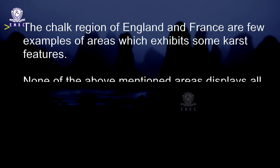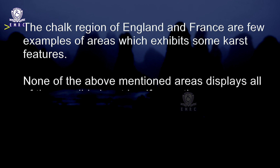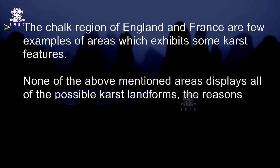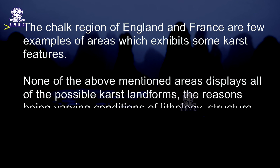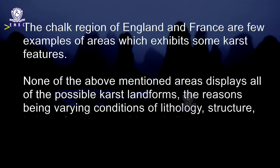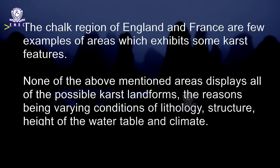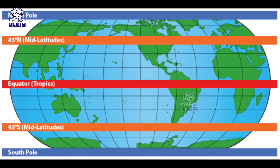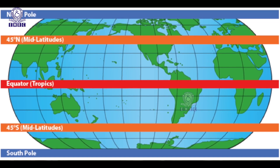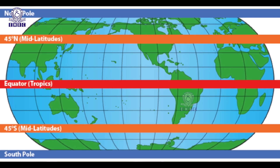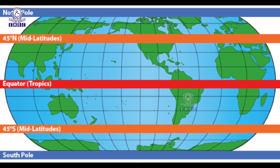None of the above-mentioned areas displays all the possible karst landforms. The reasons behind this are varying conditions of lithology, structure, height of the water table, and climate. This is well illustrated by some of the significant differences between tropical karst and that of the mid-latitudes. Full development of the karst landscape is restricted to a relatively small number of locations.